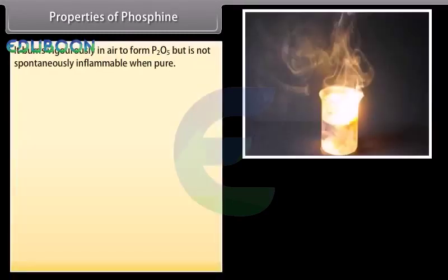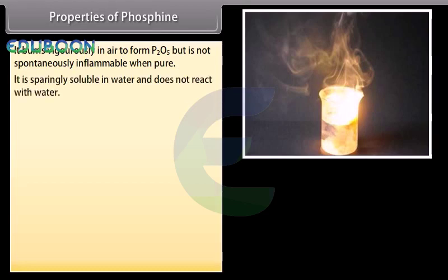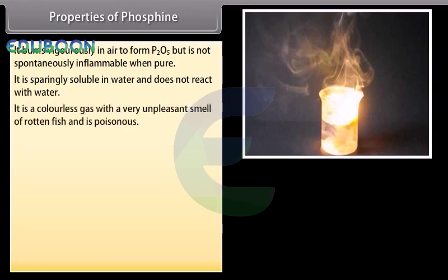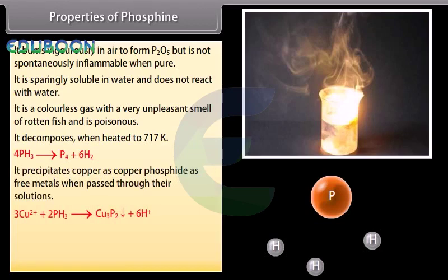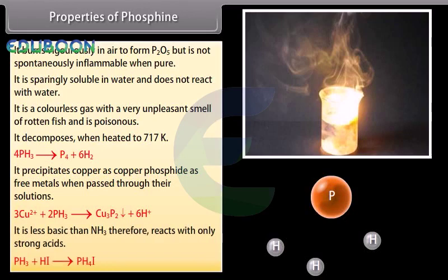Properties of phosphine: It burns vigorously in air to form P2O5 but is not spontaneously inflammable when pure. It is sparingly soluble in water and does not react with water. It is a colourless gas with a very unpleasant smell of rotten fish and is poisonous; it decomposes when heated to 717 K. It precipitates copper as copper phosphide and free metals when passed through their solutions. It is less basic than NH3 and therefore reacts only with strong acids.